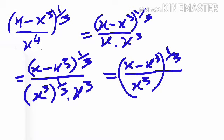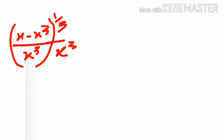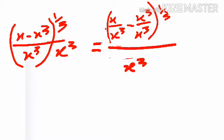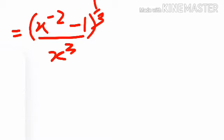Now I simplify further. Inside the bracket we have (x minus x-cube) divided by x-cube. I distribute this: x divided by x-cube, and x-cube divided by x-cube, separately. For x divided by x-cube, using the division rule for exponents, x^(1-3) equals x^(-2). And x-cube divided by x-cube equals 1. So the expression inside the bracket becomes x^(-2) minus 1, all to the power 1/3.